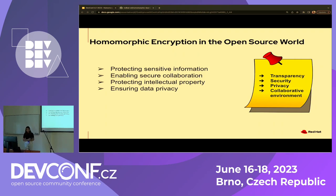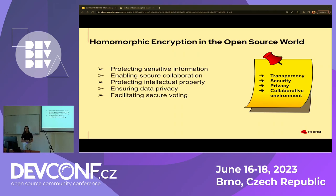Finally, ensuring data privacy: it's very important to ensure personal data is protected from leaking. Also, many open source projects have secure voting. We often have to vote on decisions in open source communities, and sometimes people don't have full privacy to cast their vote freely. Homomorphic encryption ensures that people have the right to vote and the privacy to vote for whichever project they choose.